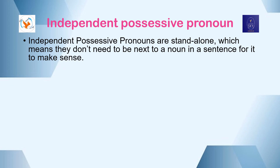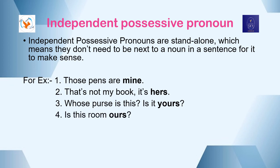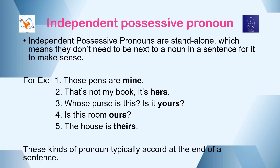Independent possessive pronouns are standalone, which means they don't need to be next to a noun for the sentence to make sense. For example: Those pens are mine. That's not my book — it's hers. Whose purse is this? Is it yours? Is this room ours? The house is theirs. These kinds of pronouns typically occur at the end of a sentence.